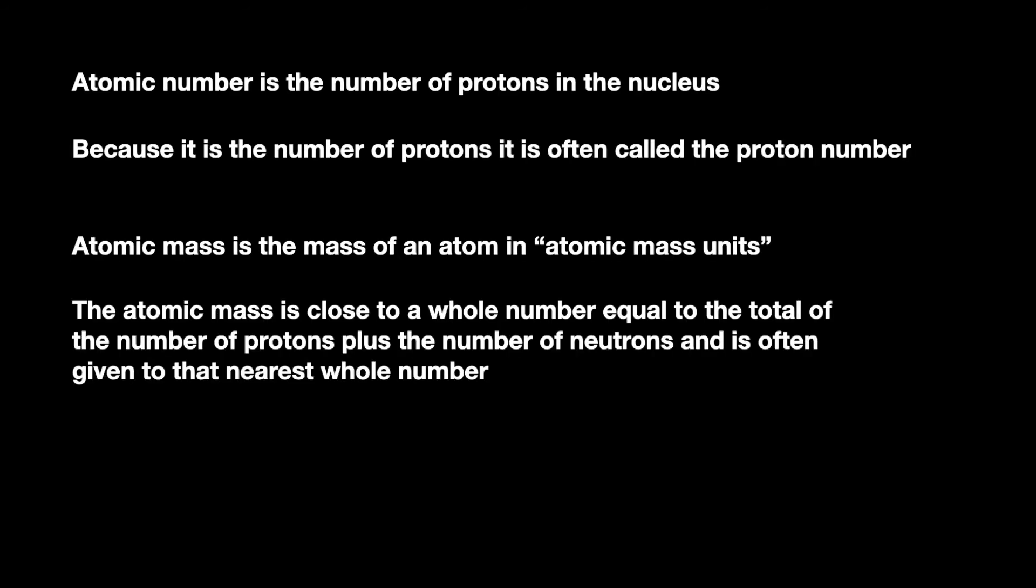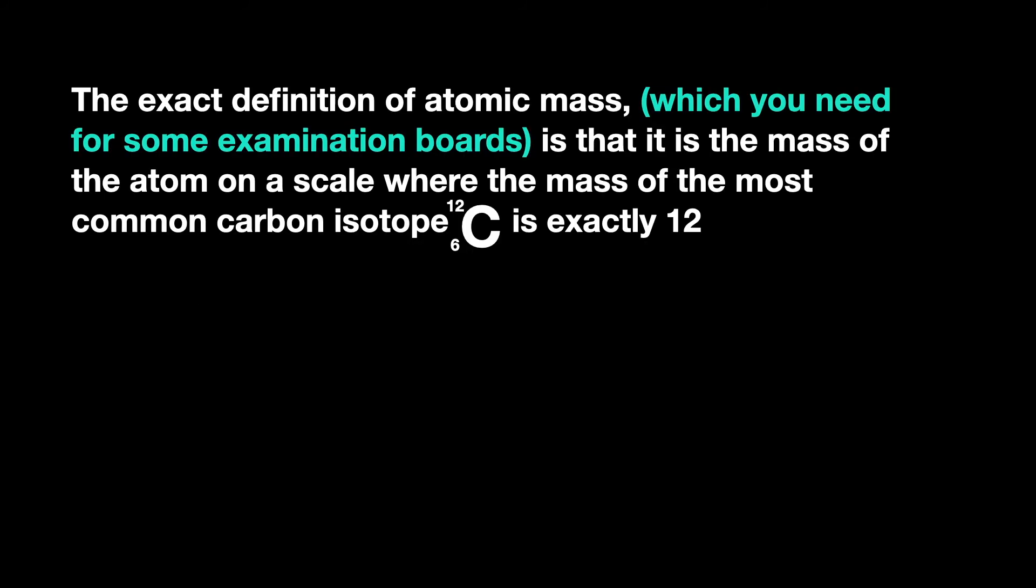The mass of a single atom is always going to be close to a whole number and is often quoted to that whole number. However, the exact definition of atomic mass, which you need for some examination boards, is that it is the mass of the atom on a scale where the mass of the most common carbon isotope, Carbon-12, is exactly 12.